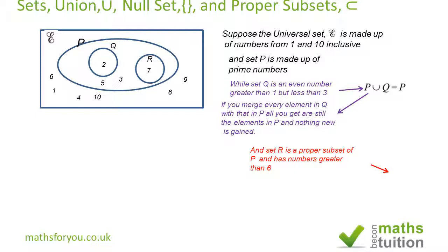So R is a proper subset of P, and we represent proper subset with that symbol there. R is a proper subset of P because R has got only one element out of the four in set P.